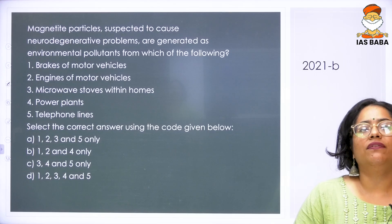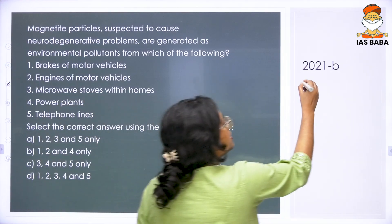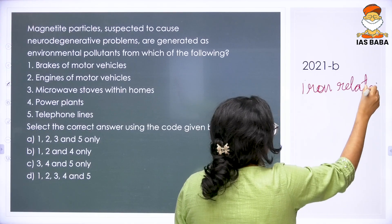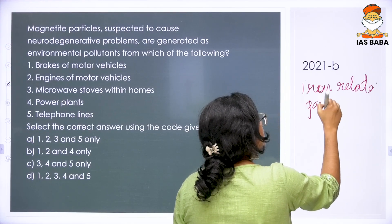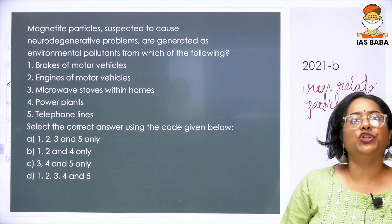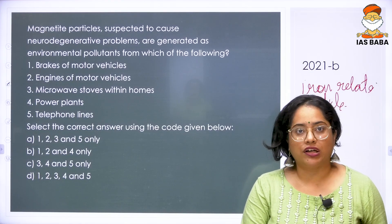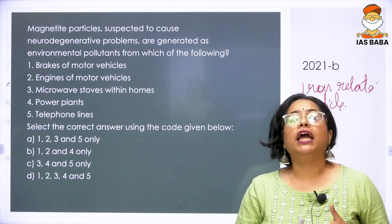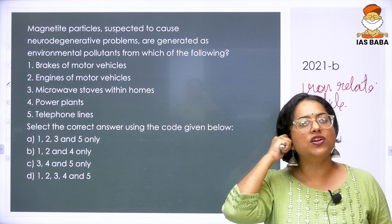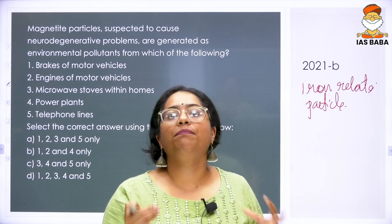Next, a 2021 question: magnetite particles — primarily an iron-related particle (you have hematite, magnetite, etc.) — are suspected to cause neurodegenerative problems. The question asks: these particles, generated as environmental pollutants, come from which of the following — brakes of motor vehicles, engines of motor vehicles, microwave stoves within homes, power plants, or telephone lines? Because magnetite is iron-based, we need to identify sources that release iron particles in various forms like iron oxides.